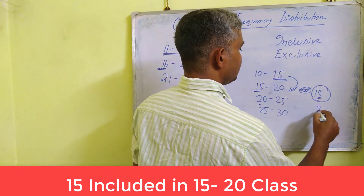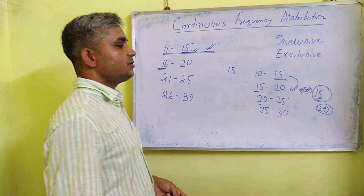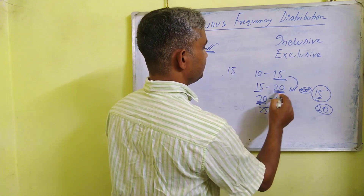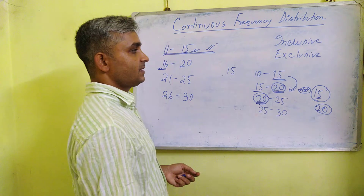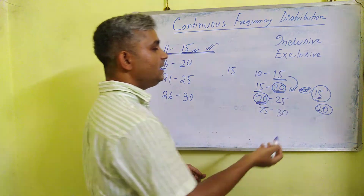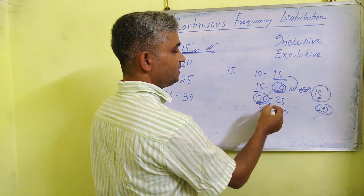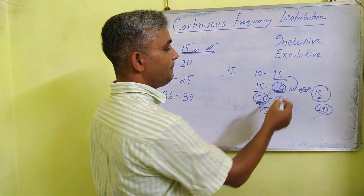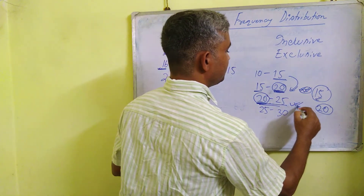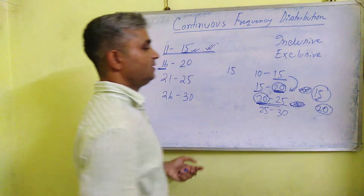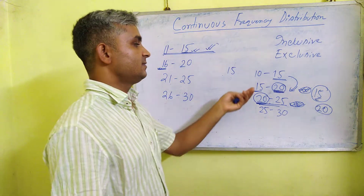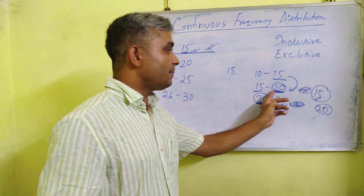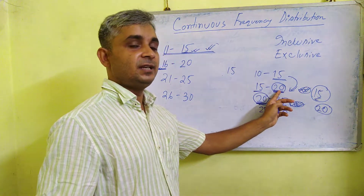Another example: the value 20. Where does 20 fall? See, 20 appears as the upper limit of one group and the lower limit of the next group — the same value. In this method, the upper limit value is excluded from the current group and falls under the next group. So 20 falls under the next group. That is why this method is called exclusive — the upper limit value is excluded and falls under the next group.